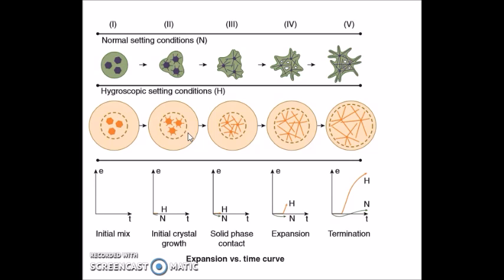Bismillahirrahmanirrahim, assalamu alaikum. Today I will be discussing hygroscopic setting expansion which takes place in gypsum products. This diagram is from Phillips Science of Dental Materials, 12th edition. On the top row, marked with green and black color, is the normal setting expansion of gypsum products. There are two gypsum products: dental plaster and dental stone.